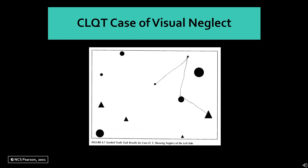What better example of left visual neglect than this symbol trail performance, where she is supposed to go from the smallest circle to the smallest triangle, next biggest circle, next biggest triangle, and so forth. You can see she doesn't pay any attention to those on the left side of space, and in fact only earns herself one point for going from the smallest circle to the smallest triangle.